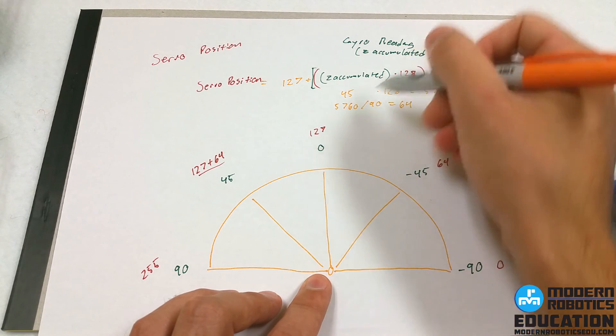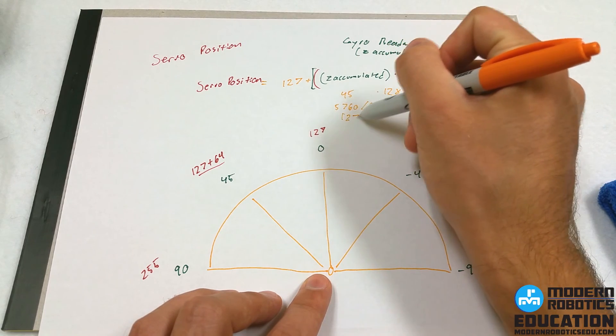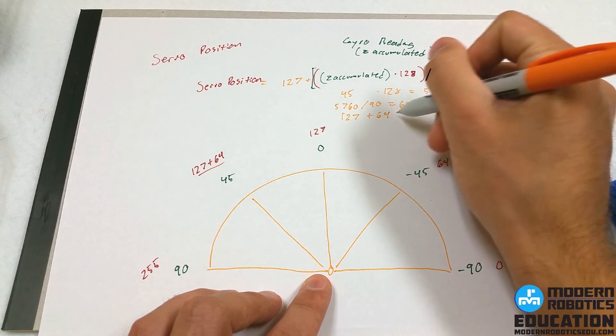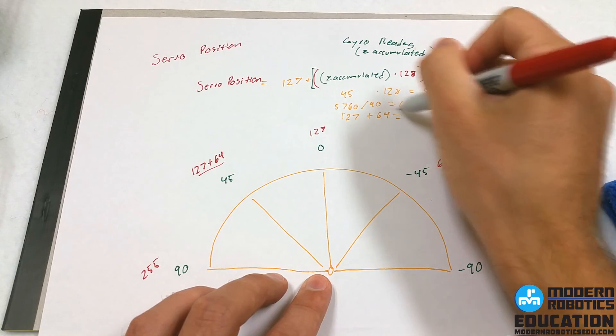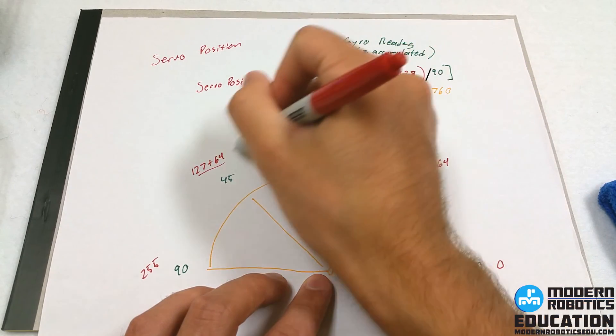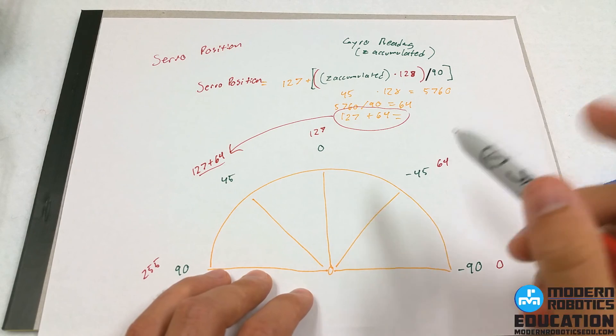And 127 plus 64 equals that guy. See how I didn't add that out there? I was thinking ahead.